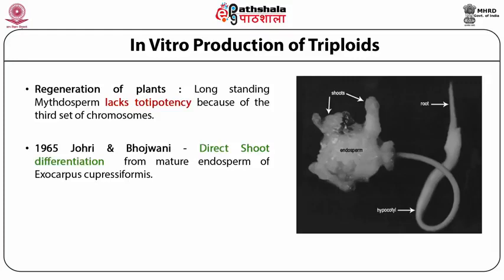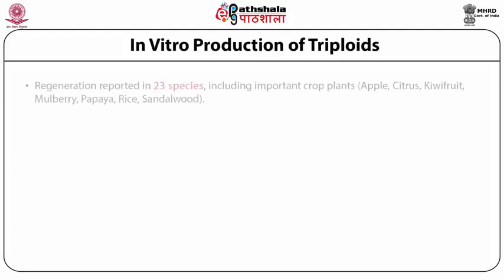You can see in this picture the embryo has germinated — you can see the root and the hypocotyl — and the surface of the endosperm is differentiating well-organized shoots which could be excised and cultured. After that, regeneration of plants, shoots, or embryos has been reported in 23 species including many important crop plants such as apple, citrus, kiwi fruit, mulberry, papaya, rice, and sandalwood.